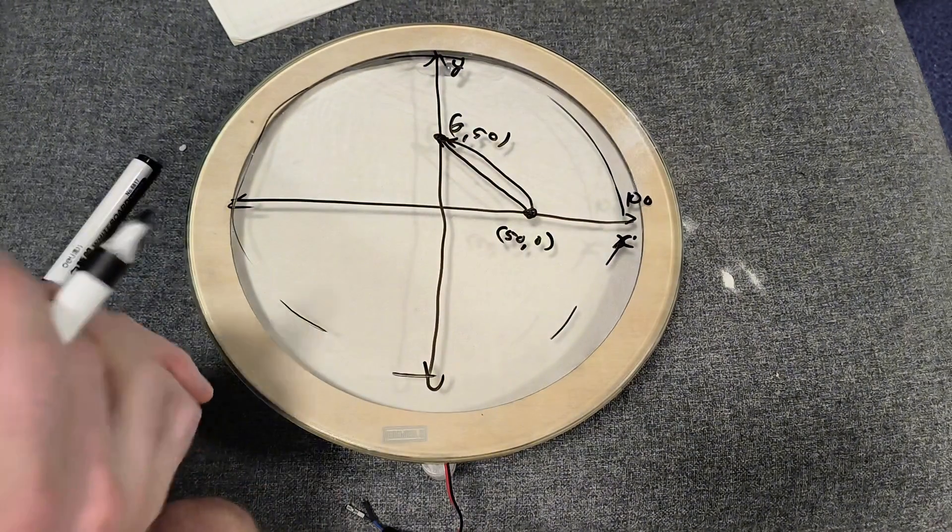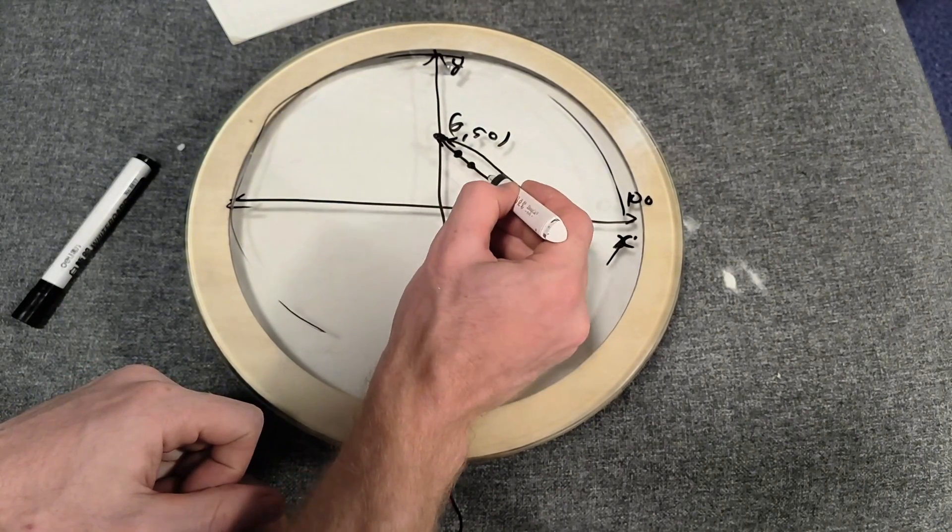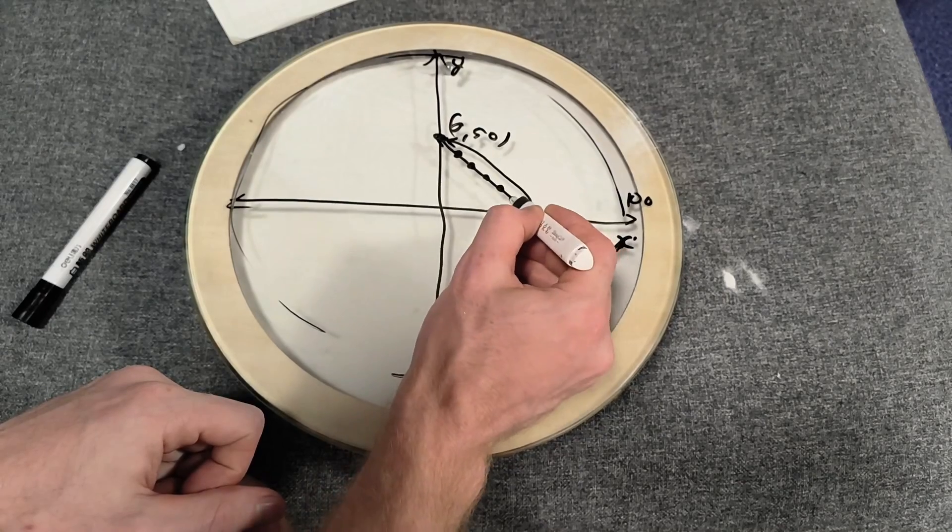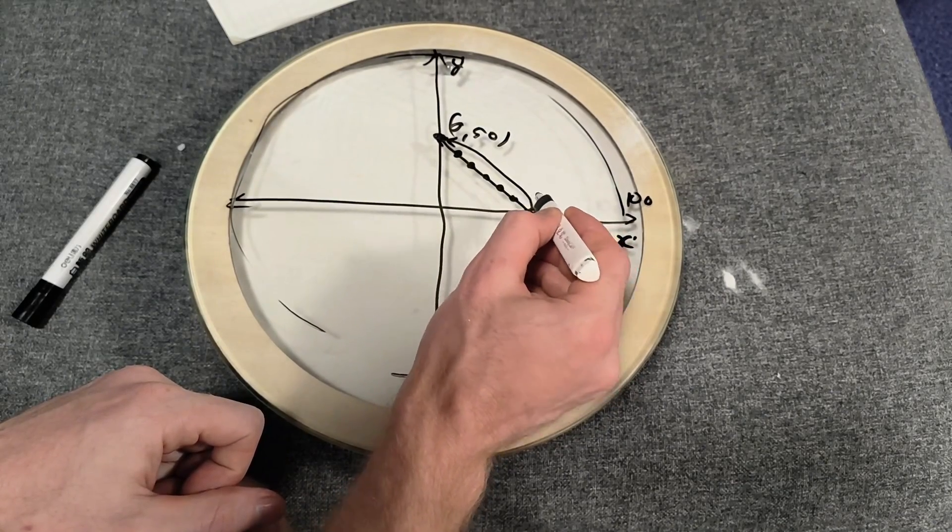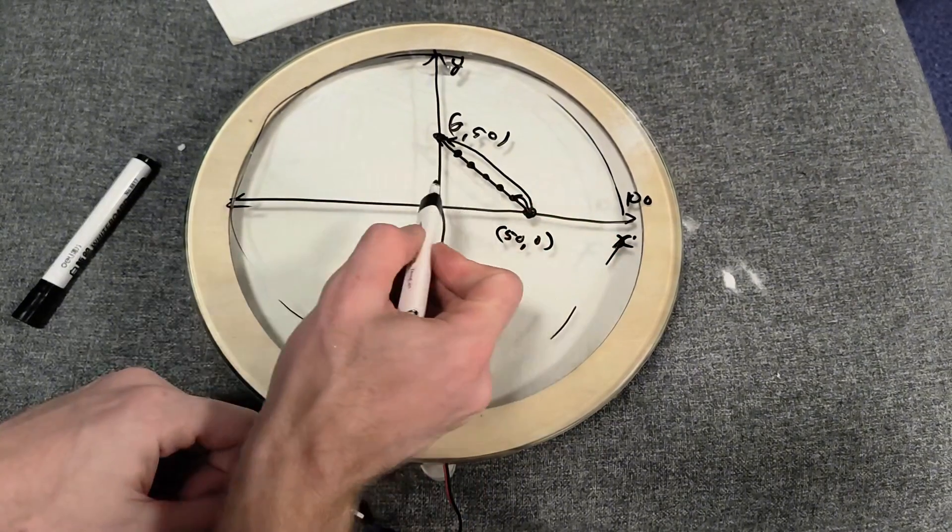But we want to be able to go in a straight line. To do that we're going to interpolate and make several smaller points between the two A and B points.